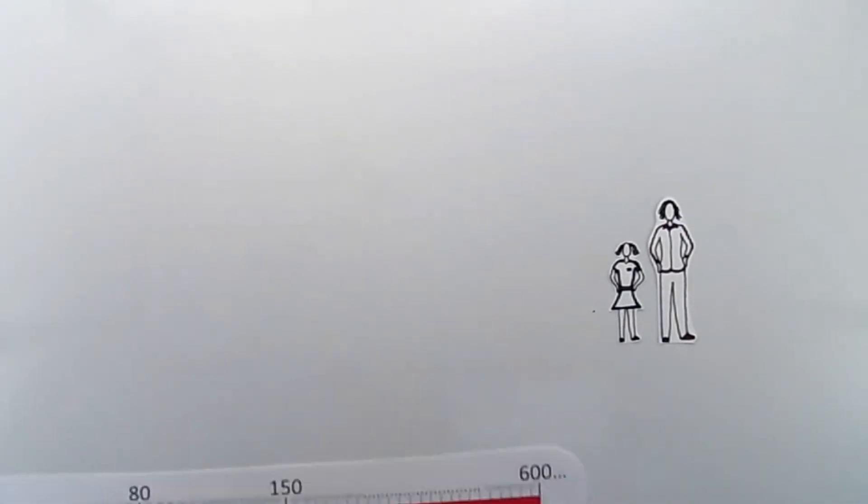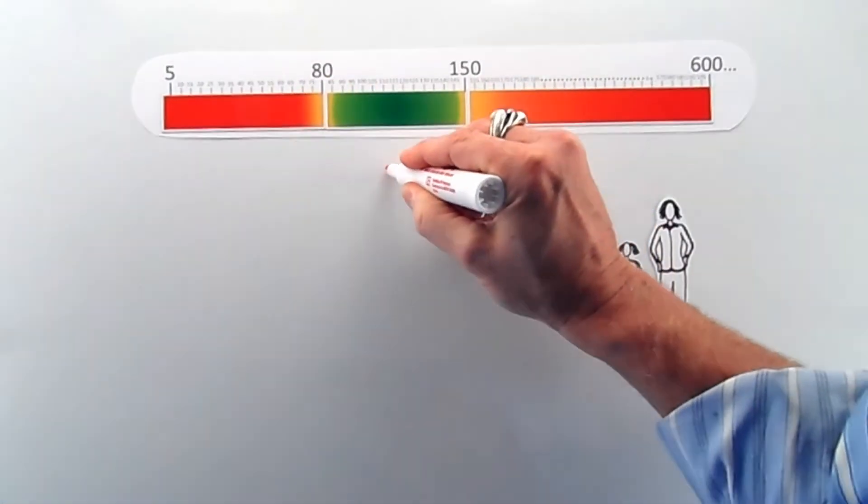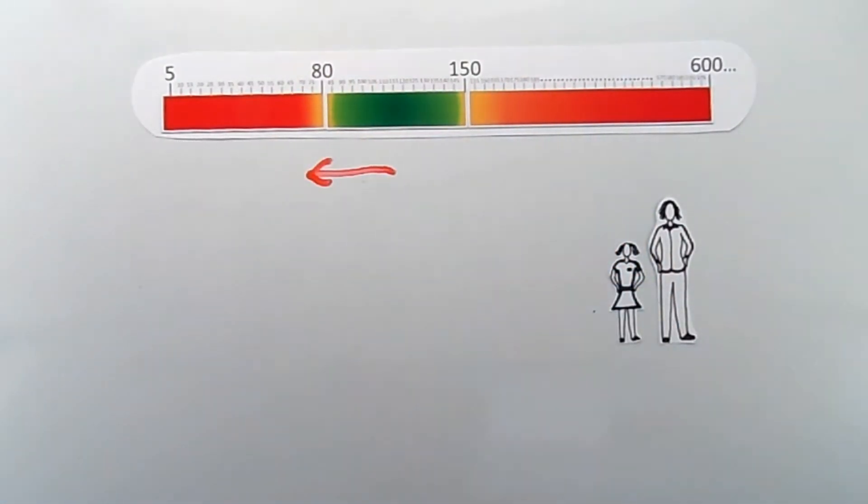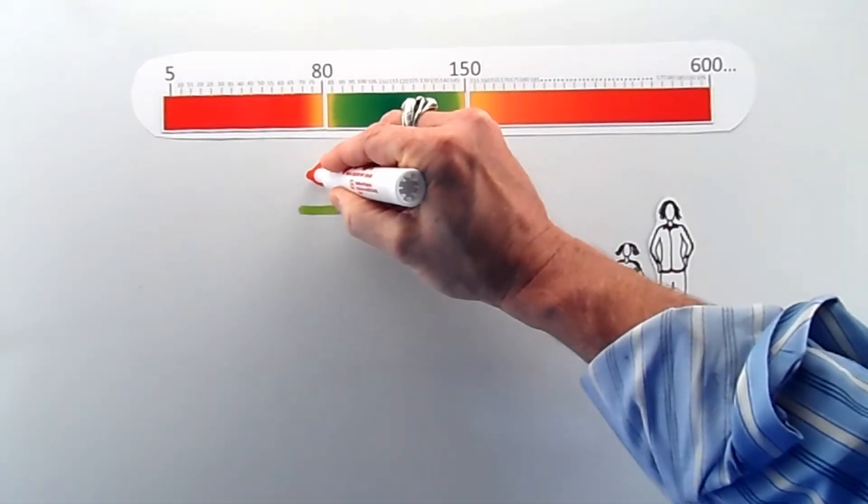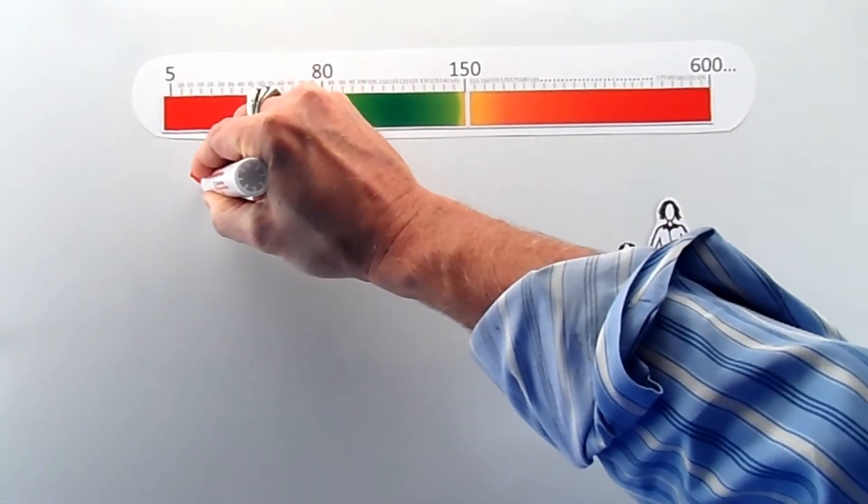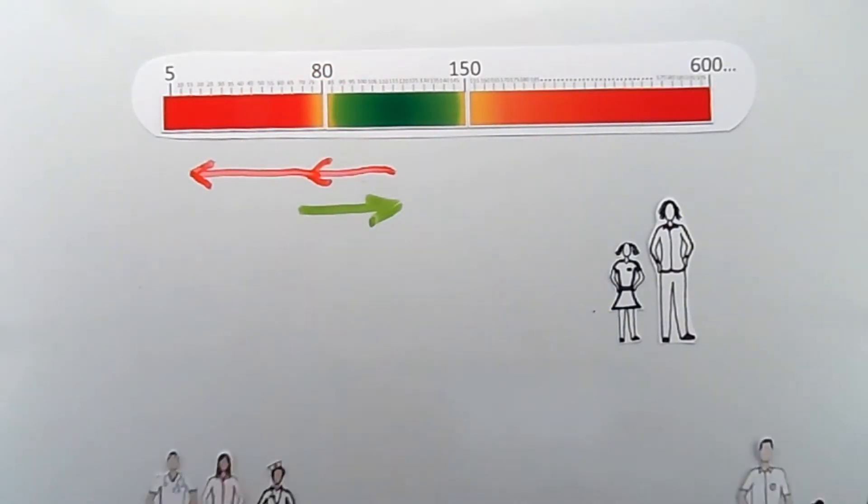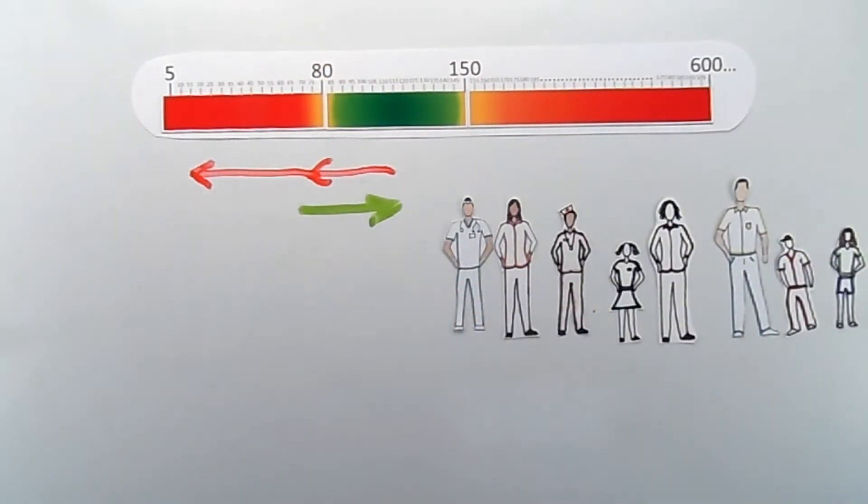As we learned in our video on highs and lows, if you experience a severe low and are able to eat or drink fast-acting carbs, you can bring up your blood sugar. However, if your blood sugar drops so low you pass out or become unresponsive, you and more importantly your caregivers need to know how to use glucagon.